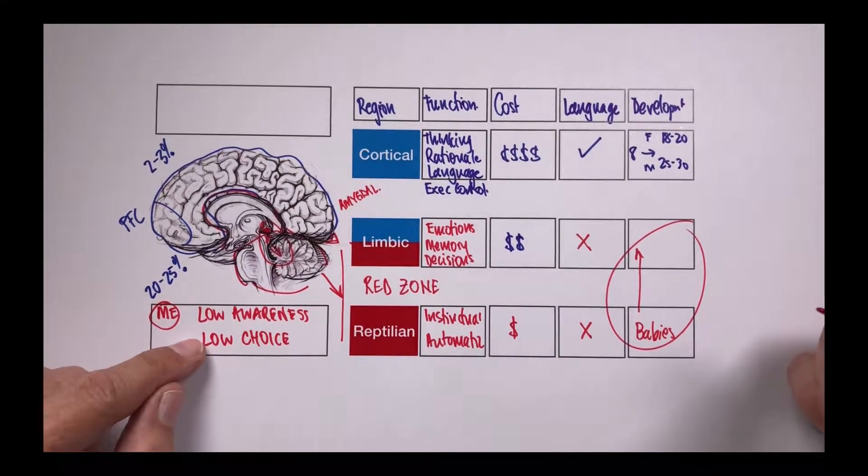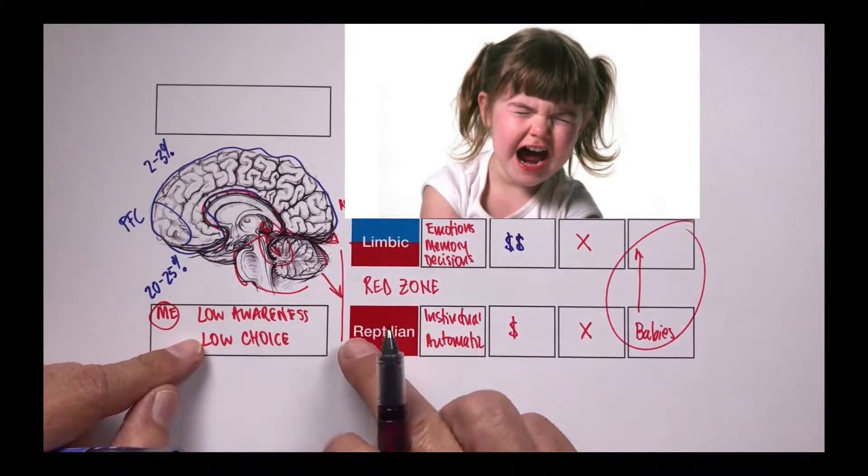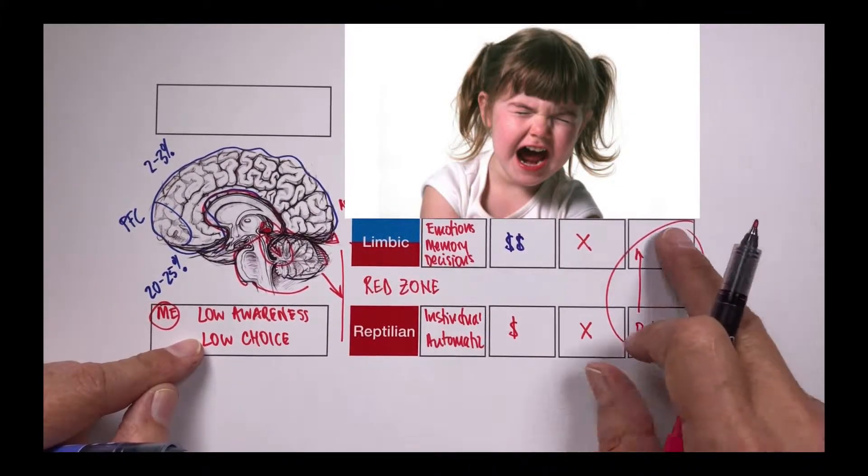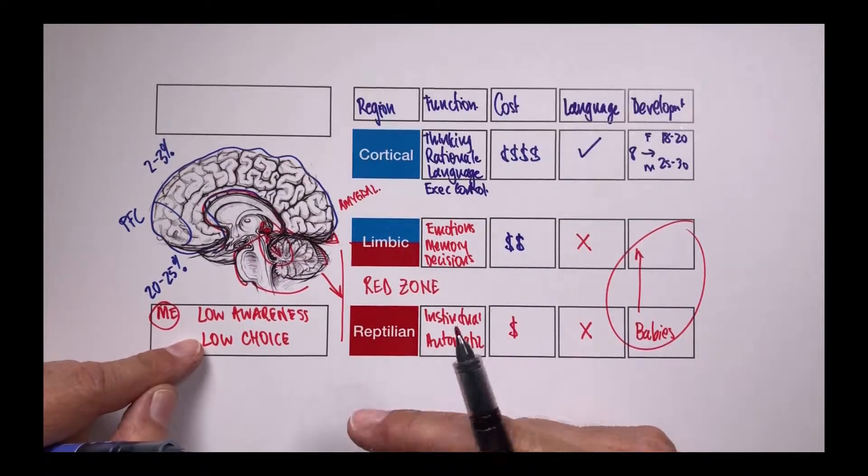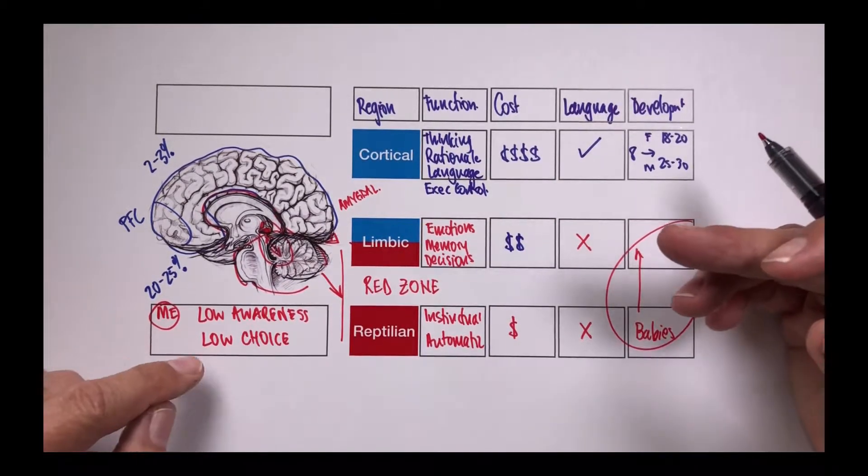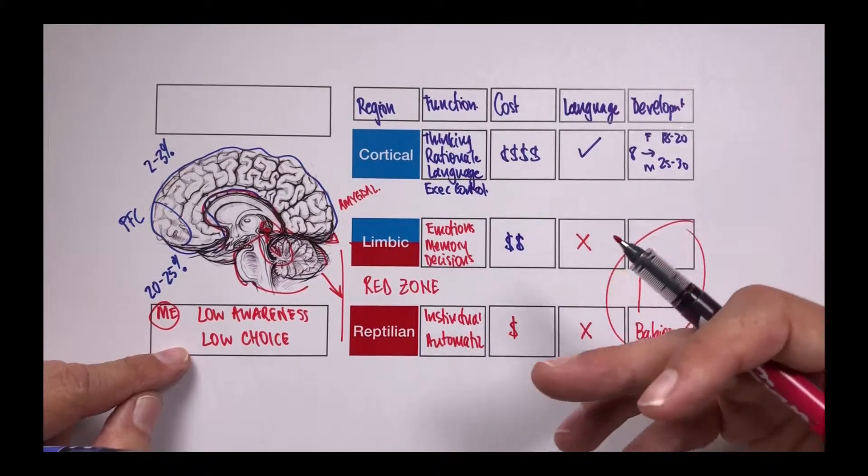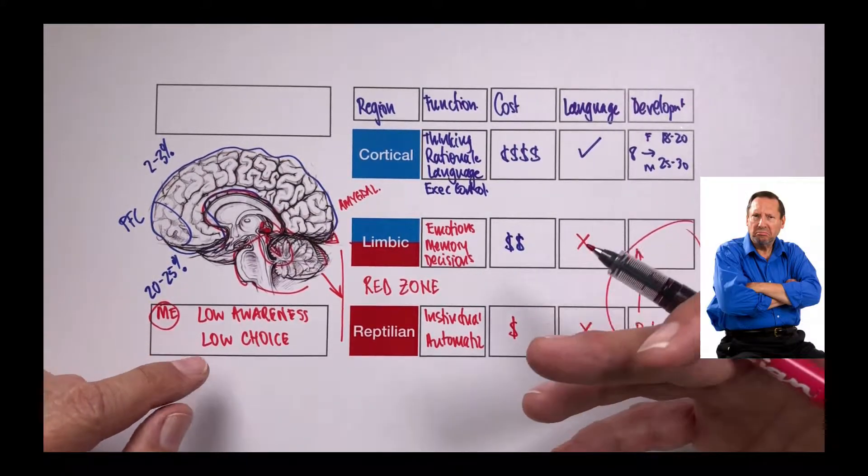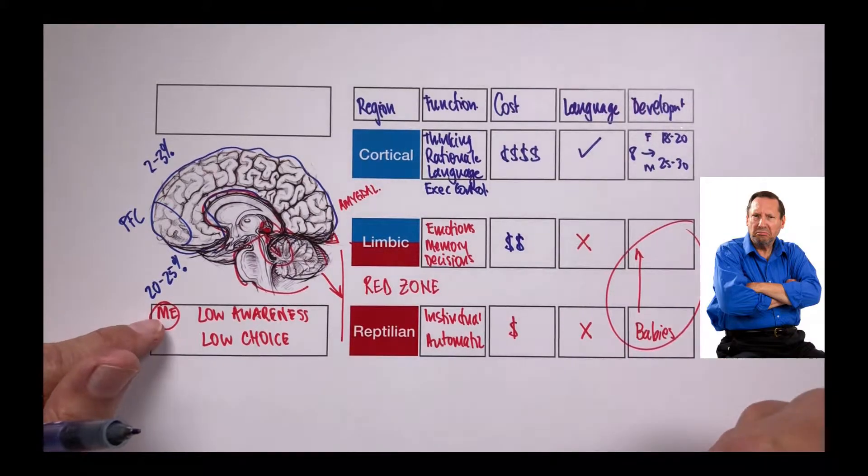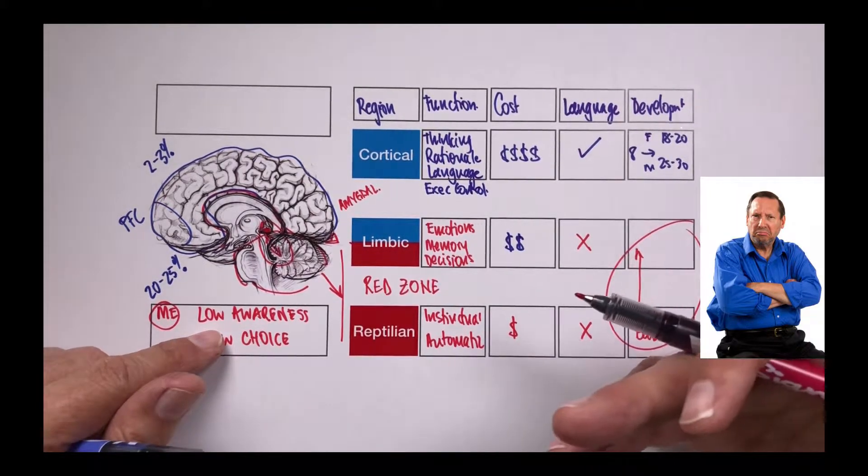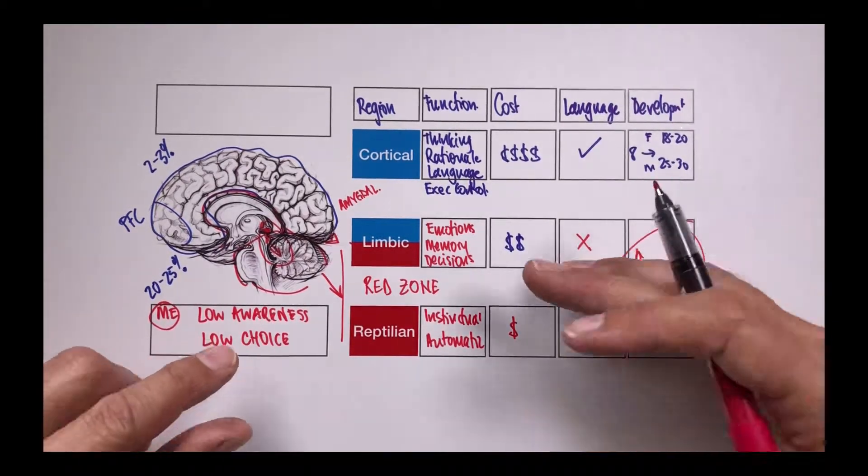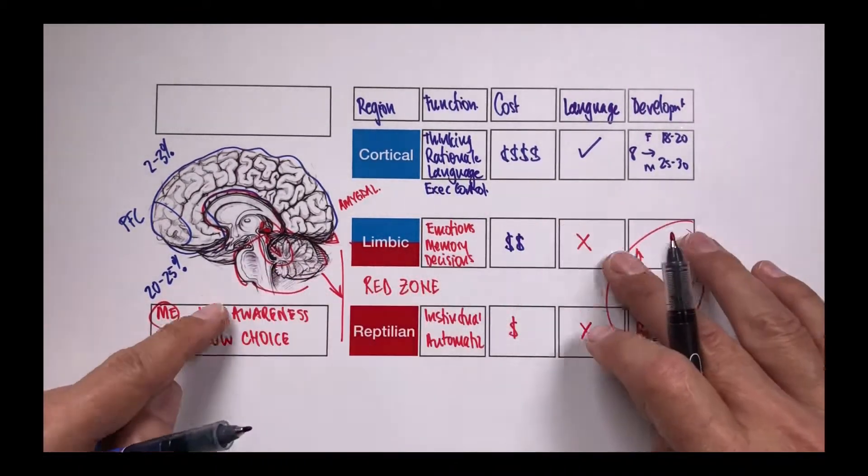So an example of this is a two-year-old tantrum. And this makes sense because you can see that two-year-olds are very much operating in this part of the world. But sometimes as we grow, we keep the habits of two-year-old tantrums and they change and modify over the years. But ultimately, these behaviors are still focused on us. We are low in awareness of the impact of this behavior on others and we don't really have a choice in it. So when we're at our worst, we are in this part of the brain.